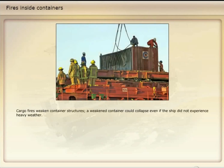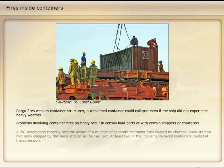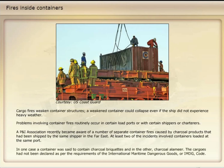Cargo fires weaken container structures, and a weakened container could collapse even if the ship did not experience heavy weather. Problems involving container fires routinely occur in certain load ports or with certain shippers or charterers. A P&I association recently became aware of a number of separate container fires caused by charcoal products shipped by the same shipper in the Far East. At least two incidents involved containers loaded at the same port — in one case containing charcoal briquettes and in the other charcoal alumia. The cargoes had not been declared as per the requirements of the International Maritime Dangerous Goods (IMDG) code.